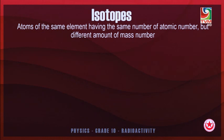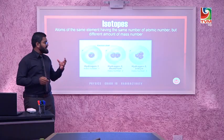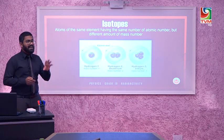Atoms come in families, which we call isotopes. Isotopes are atoms of the same element having the same atomic number but different mass number. For example, hydrogen has two isotopes: deuterium and tritium. The only difference between these three particles is that the number of neutrons are varying.